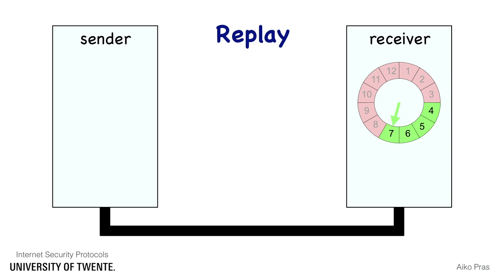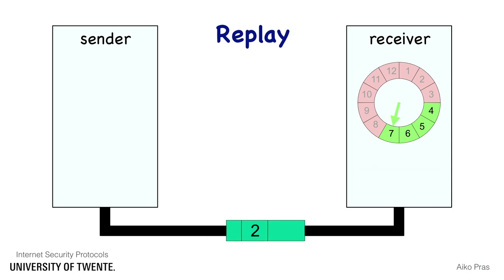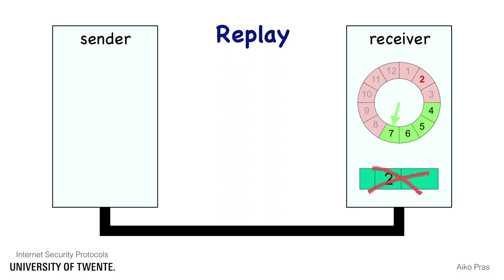Assume now that a man in the middle has captured the packet with sequence number 5 and replayed that packet. The packet will arrive at the receiver, but the receiver knows from the fact that number 5 has been marked black that a packet with that number has already been received. The receiver therefore knows that the packet has been replayed and will drop it. If a packet arrives with a sequence number below the lowest number in the window, the packet is also regarded as a replay attack and will also be dropped.